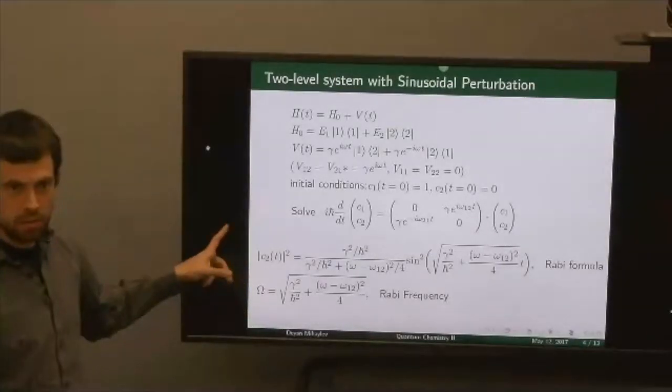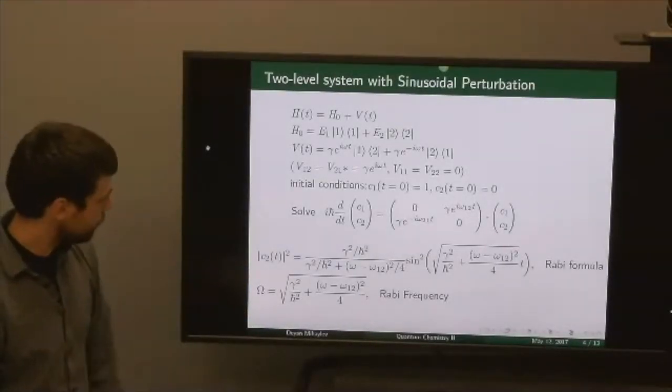So those are the fundamental results for a two-level system in terms of the Rabi frequency and gamma, which is the strength of perturbation.